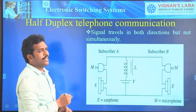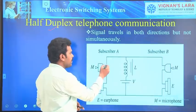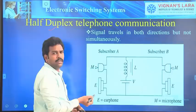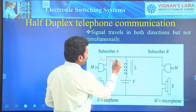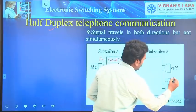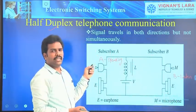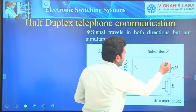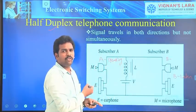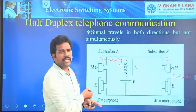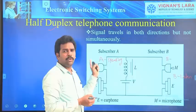The next topic is half-duplex telephone communication. What is half-duplex? Communication is possible in both directions, but only one at a time. That means if A is speaking, B has to listen and cannot talk back; when B is speaking, A has to listen. This is called half-duplex communication. The circuit is the same as simplex, but here earphones and microphones are provided for both subscribers.